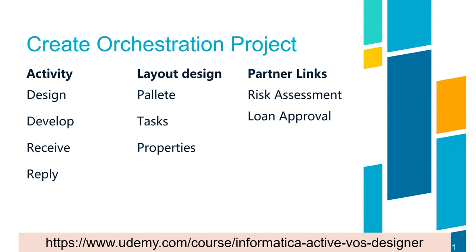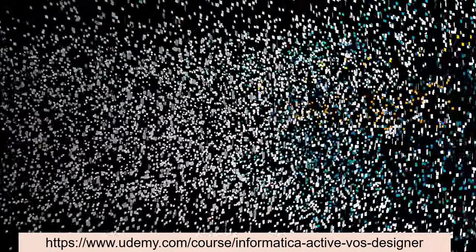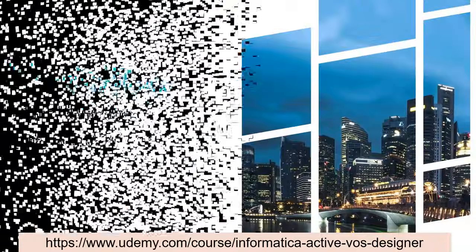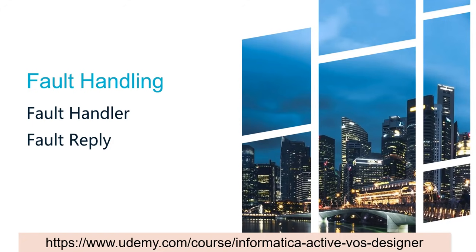We are going to use the external or partner links for achieving risk assessment in our loan approval process as well as for approving the loan. Once the orchestration project development is done, the next thing to handle is error scenarios, which can be implemented using fault handling with a fault handler. We also need to add a reply if an error or fault occurs during execution.